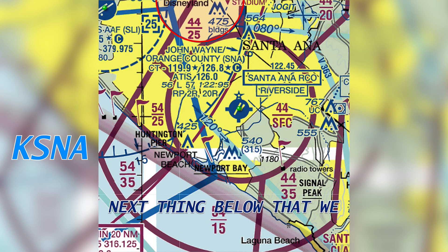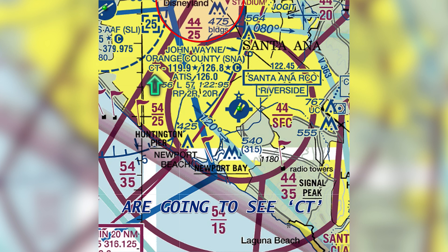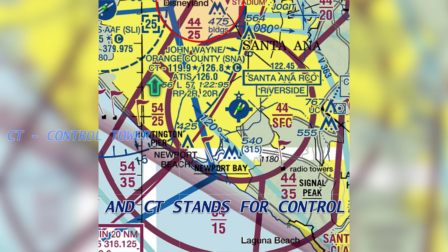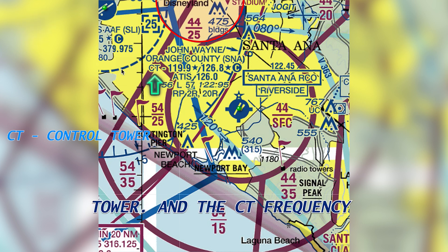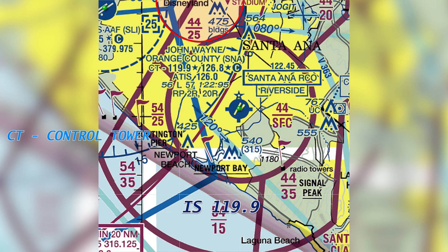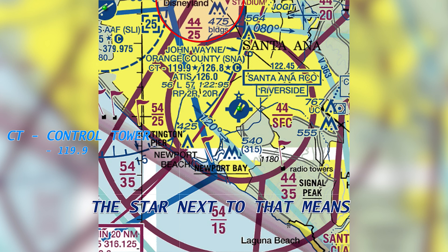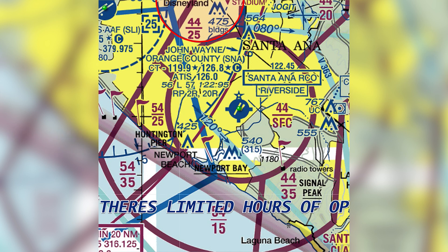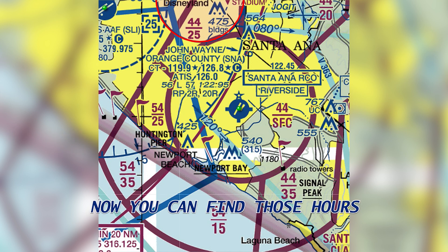Next, down below and to the left, we're going to see CT, which stands for control tower. The control tower frequency is 119.9. The star next to that means there's limited hours of operation. Where do you find those limited hours of operation? You're going to find them on the back of the sectional chart.